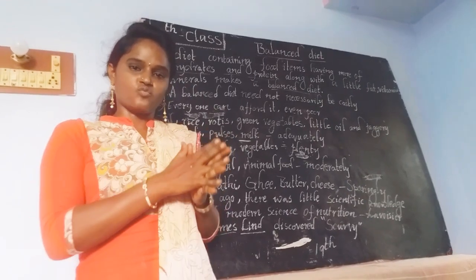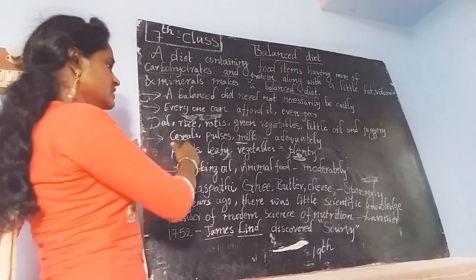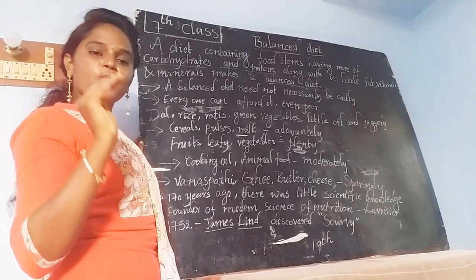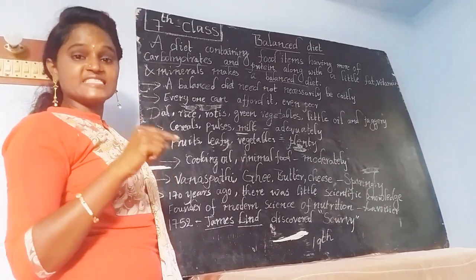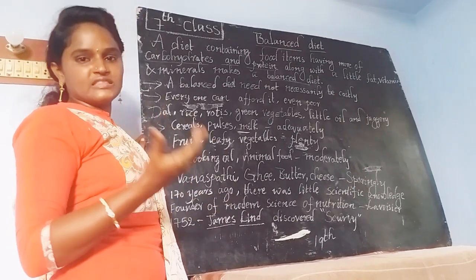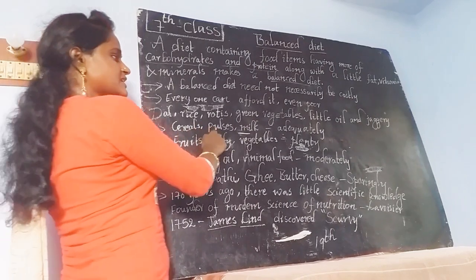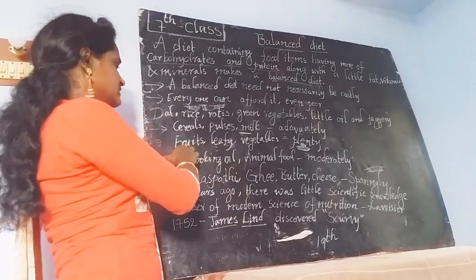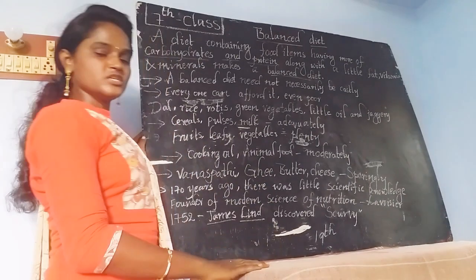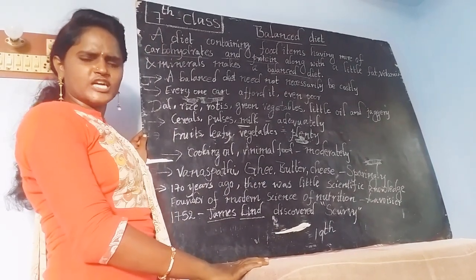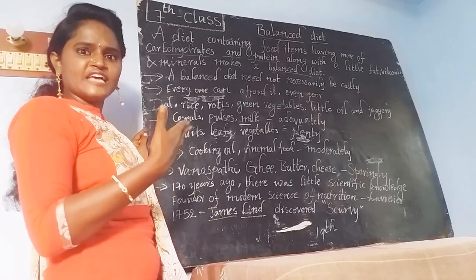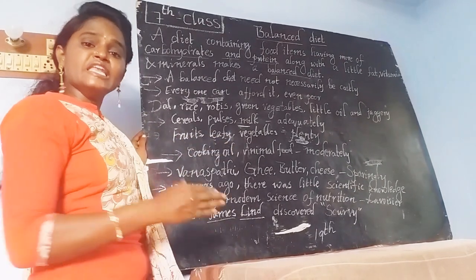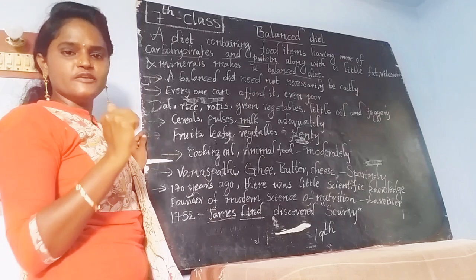What is meant by adequate? Adequate means sufficient amount of food we have to take — that is called adequate. Cereals, pulses, milk — we have to give to our body in an adequate manner. Then fruits and leafy vegetables — we have to give in plenty. Plenty means in large amounts. We should supply fruits and leafy vegetables in a plentiful manner to our body — then only we should be healthy.